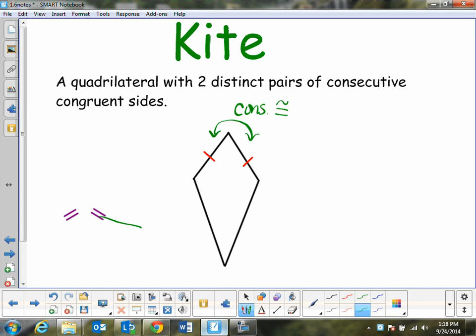So here we have this pair of this side and this side. Again, these two sides are consecutive and congruent.